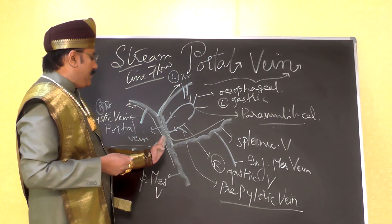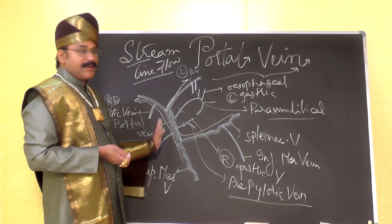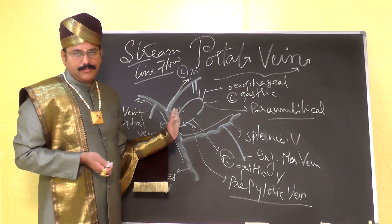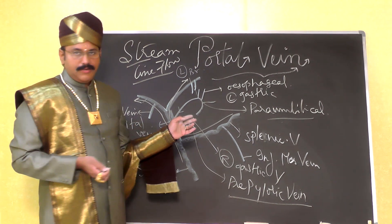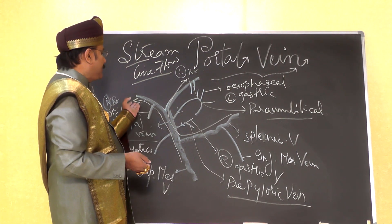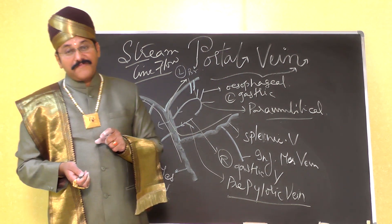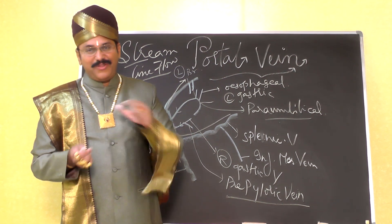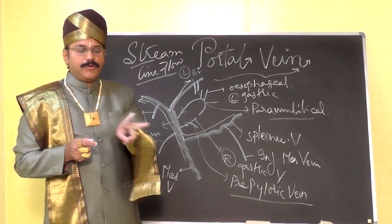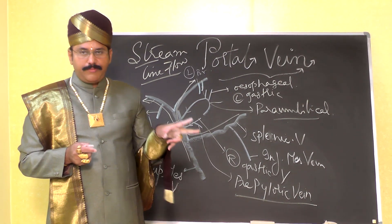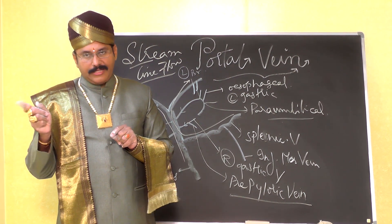The portal vein ascends upwards and turns to the right with a right inclination. It divides into right and left branches in the porta hepatis, seen on the inferior surface of the liver. In the porta hepatis, the portal vein divides into a right shorter branch and a left longer branch.